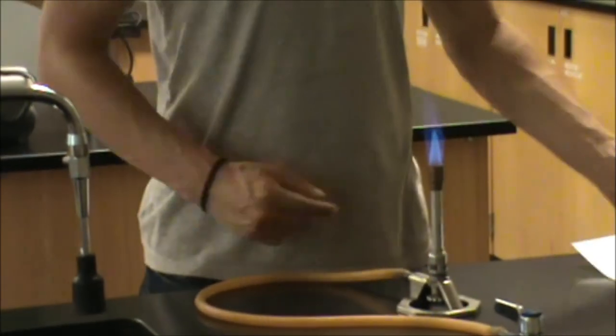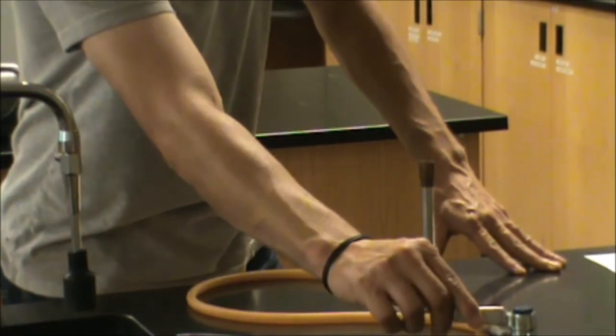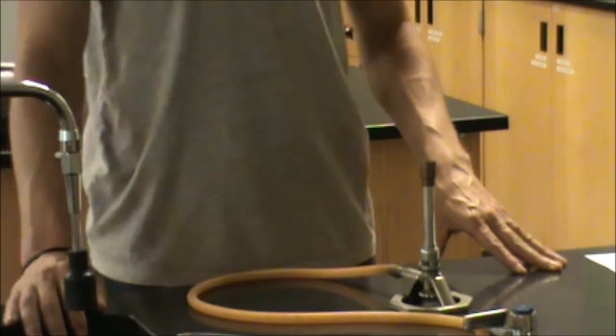When you're done with the Bunsen burner and you're ready to turn it off, simply turn the gas valve off and it will go out.